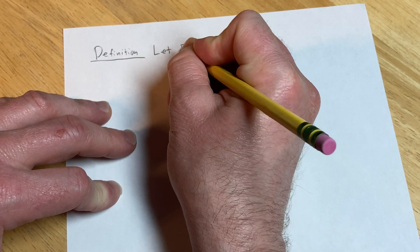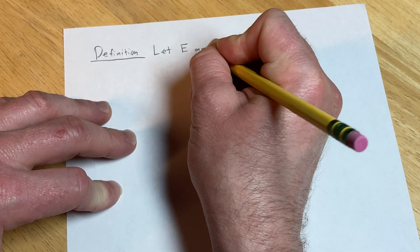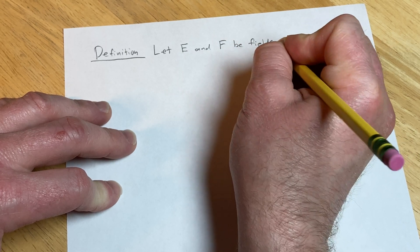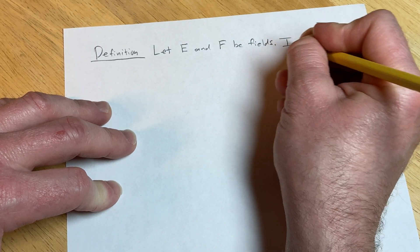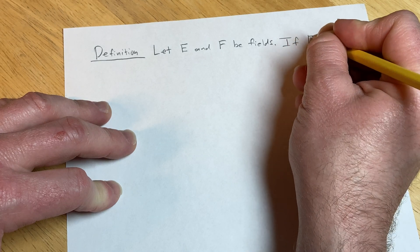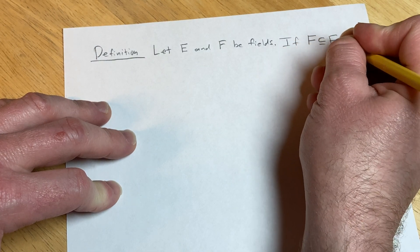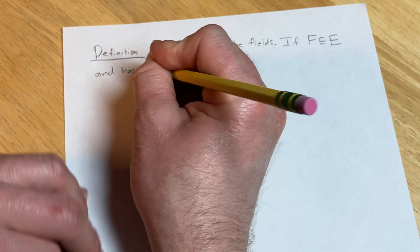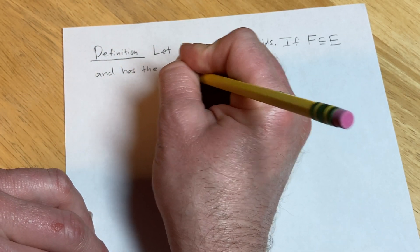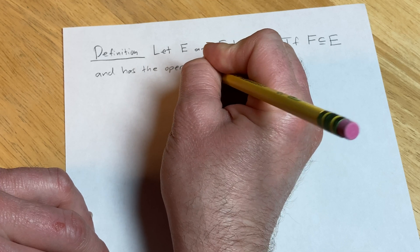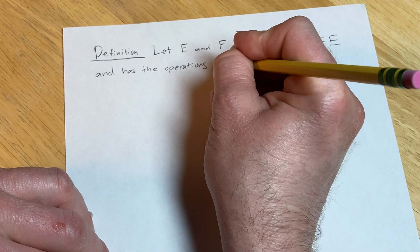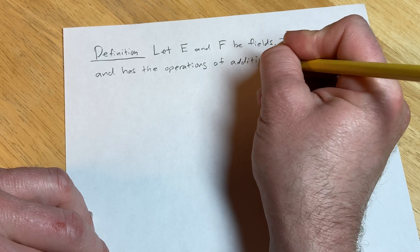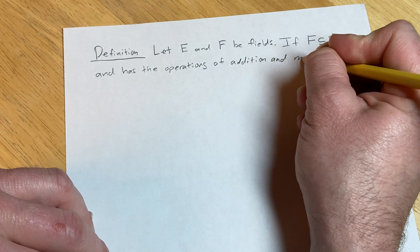Let E and F be fields. If F is a subset of E and has the operations of addition and multiplication,